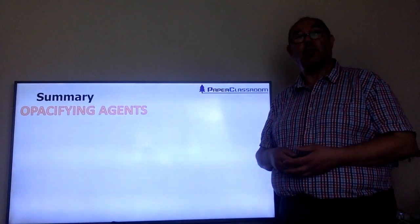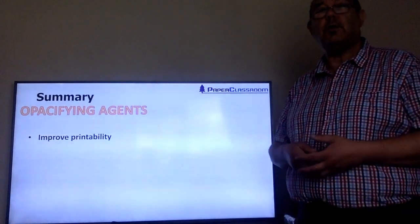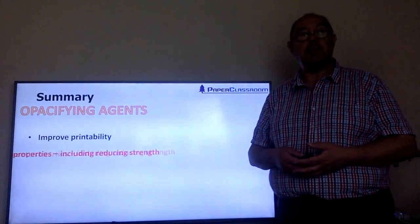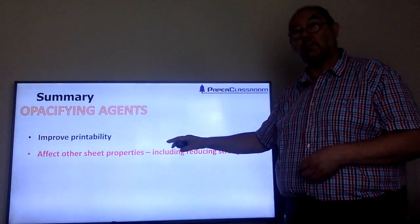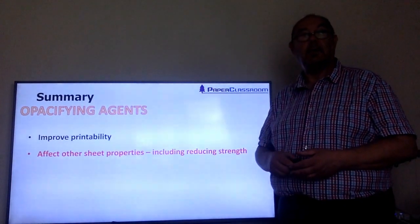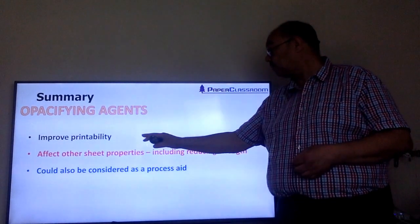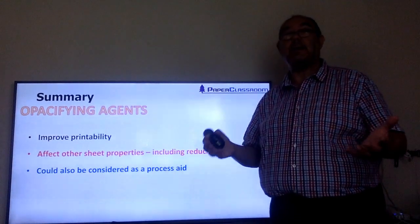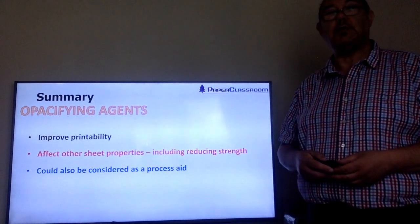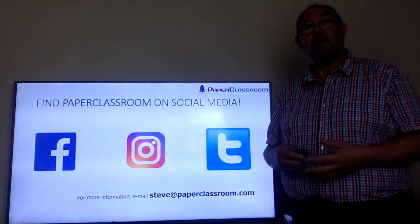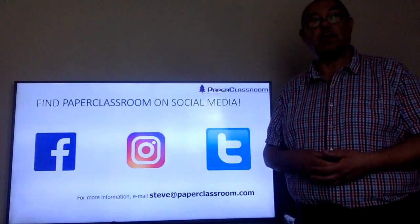In summary, opacifying agents are used to improve the printability of the sheet. They will affect sheet properties beyond just opacity — improving brightness, smoothness, and reducing porosity — but they will reduce strength. They can also be considered a process aid because they make the sheet cheaper. Thank you for listening to this short video, and please feel free to follow us on social media.